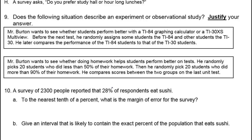So if the researcher decides who gets what, it's an experiment. If the subjects themselves decide which category they're in, then it's an observational study. Mr. Burton wants to see whether students perform better with a TI-84 graphing calculator or a TI-30XS multi-view. Before the test, he randomly assigns some students the TI-84 and other students the TI-30, and later compares the performance of the two groups.